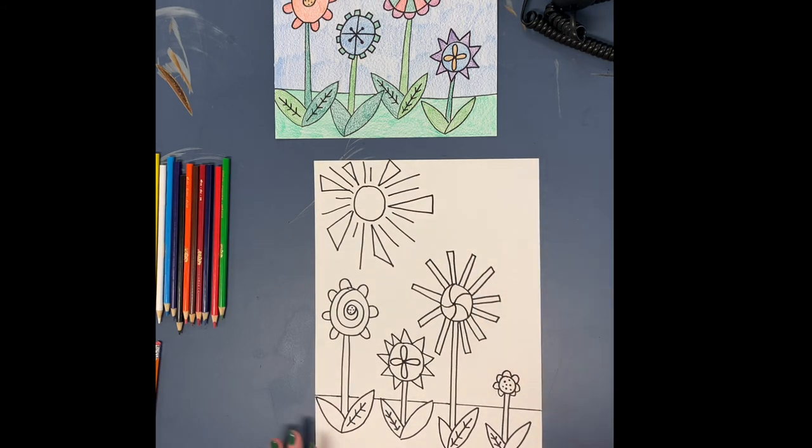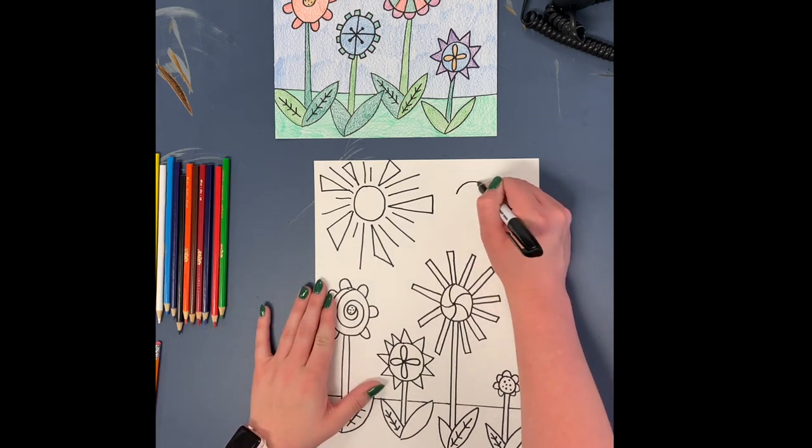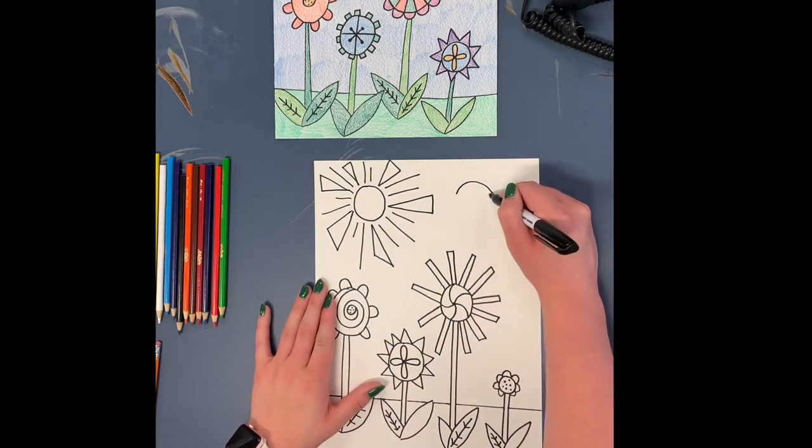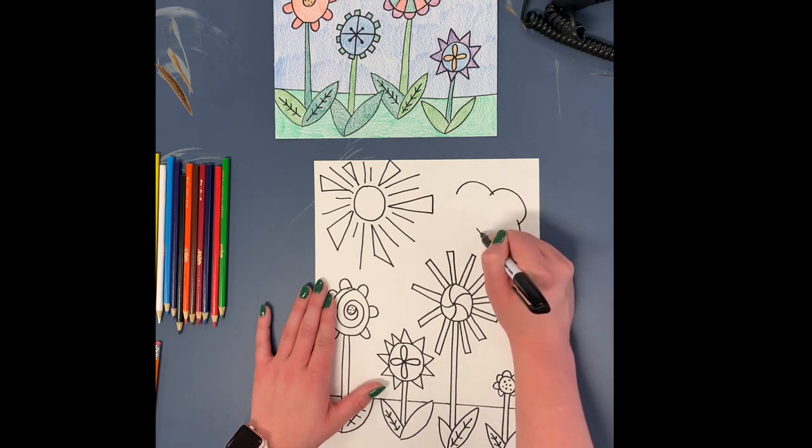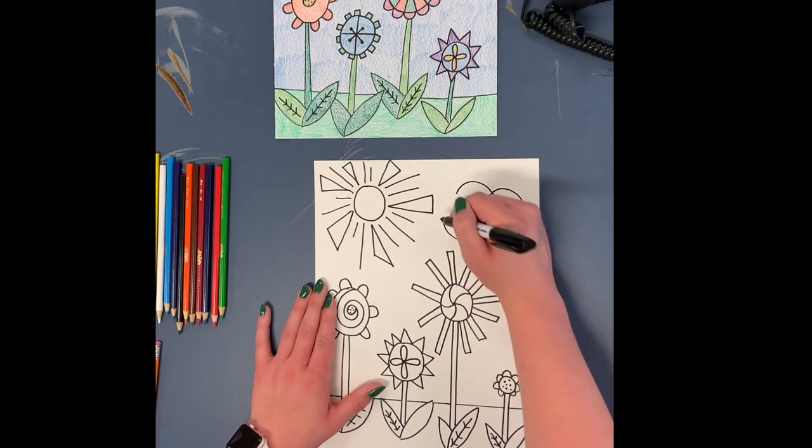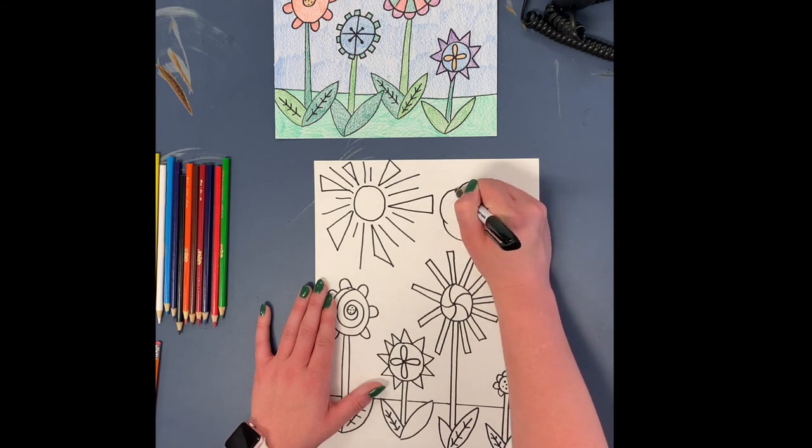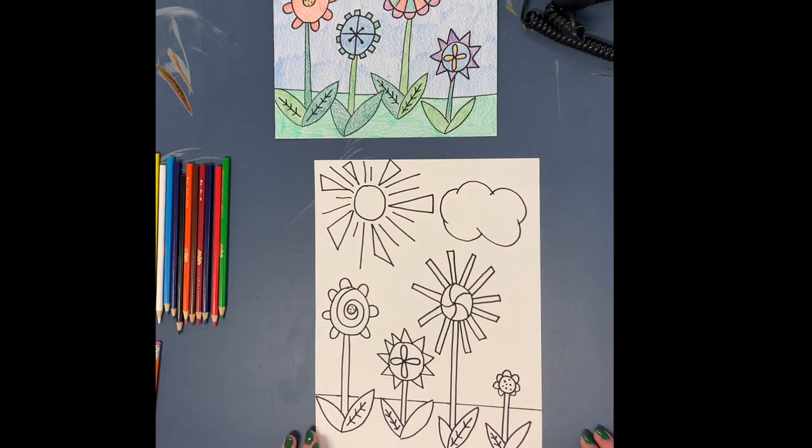I'm going to show you a little cloud over here too, in case you want to add a cloud to yours. Clouds are kind of just big blobs. You give it a whole bunch of different curved lines. Doesn't have to be perfect. It's a cloud. Clouds have funny shapes all the time. And there is our whole drawing.